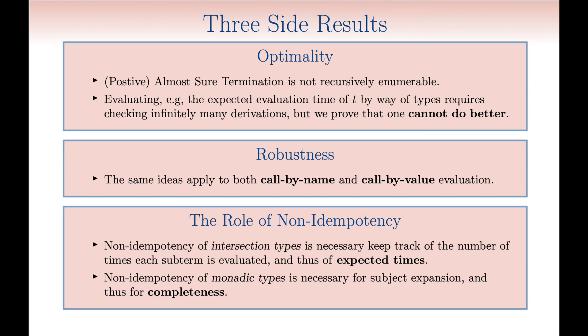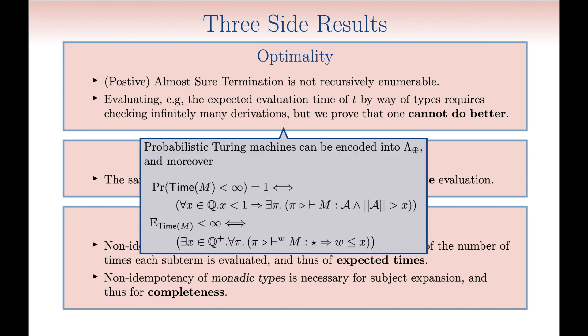Let us now re-examine the three side results we outlined at the beginning of this talk. Optimality is proved by an encoding of Turing machines, actually, randomized Turing machines, into our lambda calculus, which, together with some hardness results by Kaminsky et al, imply that AST and PAST remain non-recursively enumerable even in lambda plus. AST is pi-02 complete, and PAST is sigma-02 complete.